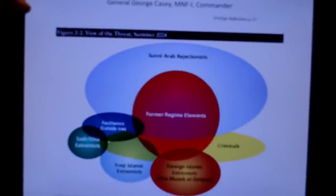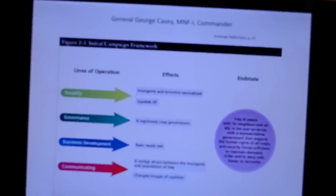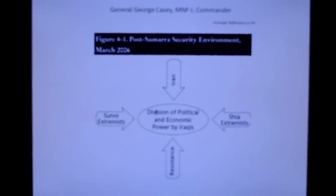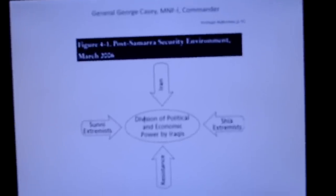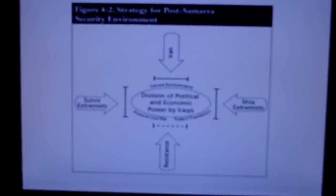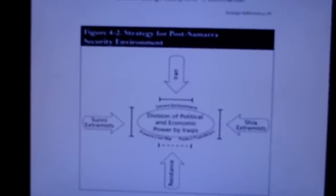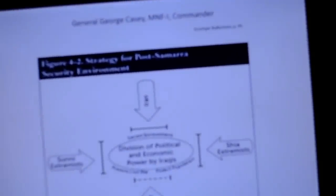This specifically is his view of the threat in the summer of 2004. You can see it is conceptual — a presentation diagram with an initial campaign framework showing lines of operation, effects or conditions, and an end state. This is General Casey's view of the post-handover security environment in March 2006 — once again, conceptual.